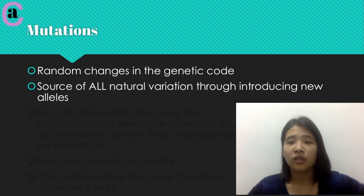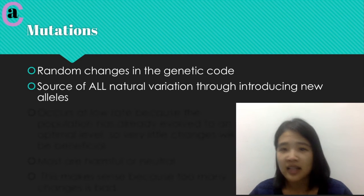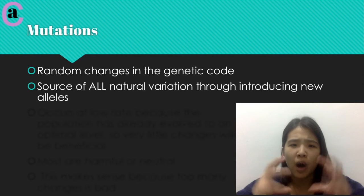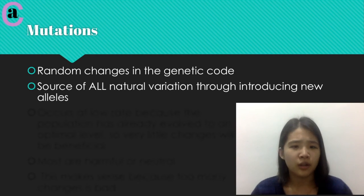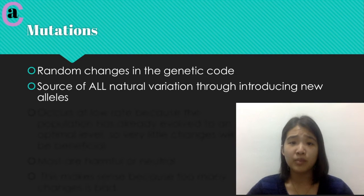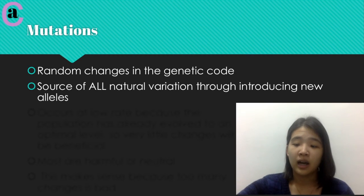Because of this, mutations are actually the source of all natural variation, and this is the way that new alleles are introduced. In the last couple years, we've seen people who can modify the genetic code — you can see GMO corn, GMO soybeans, and so on. But mutations, if you want to do them completely naturally, are the only way that you can change the genetic code.